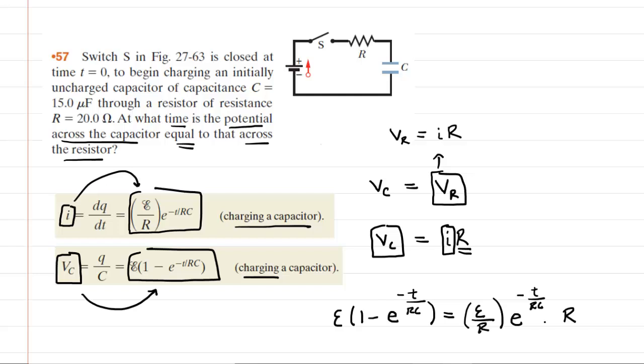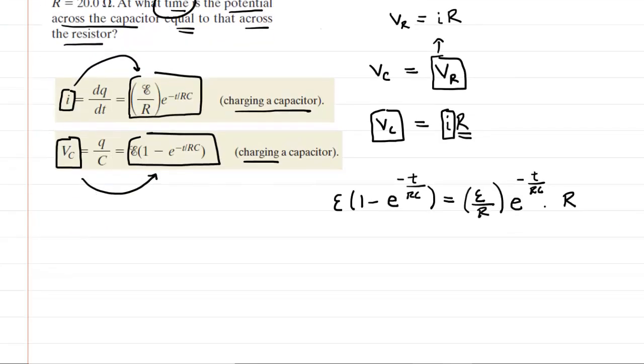So here is our setup and our goal is to find the time. So we have to solve this for T. Now, if we look carefully here, we can do some simplifying. The resistance in the denominator here and the resistance in the numerator there would cancel out because of the multiplication.